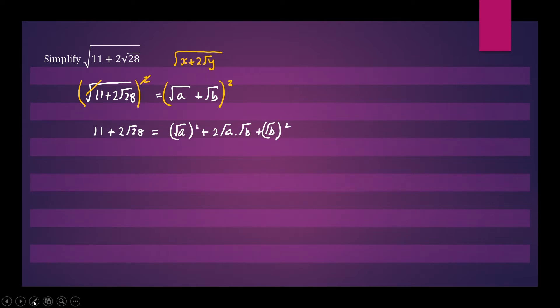So let's simplify the right-hand side. Again, we'll write 11 plus 2 root 28 equals a, plus 2 times root a times root b, we'll write as 2 root ab, plus root b squared is b.